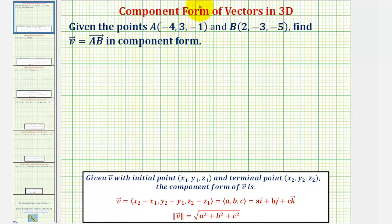And because A is the initial point, this would be X sub one, Y sub one, and Z sub one. And because B is the terminal point, this would be X sub two, Y sub two, and Z sub two.